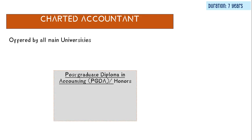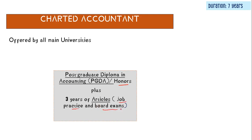Remember, you will not become a chartered accountant in three years — it actually takes seven years. After you finish your degree, you do a PGDA (postgraduate diploma in accounting), which is equivalent to honours. Then you do another three years of articles, which is essentially job practice, and you write some board exams. You do not only get paid after seven years — once you start your articles, the company you're training with will give you an allowance.